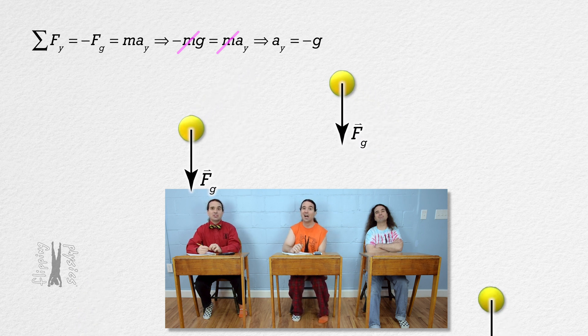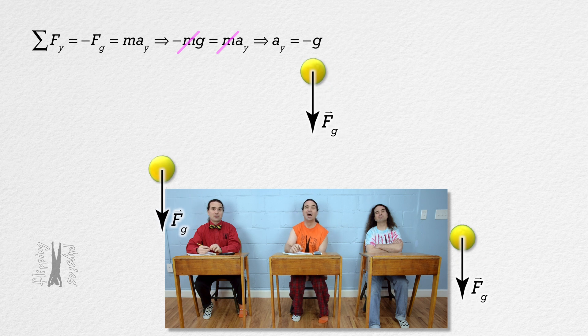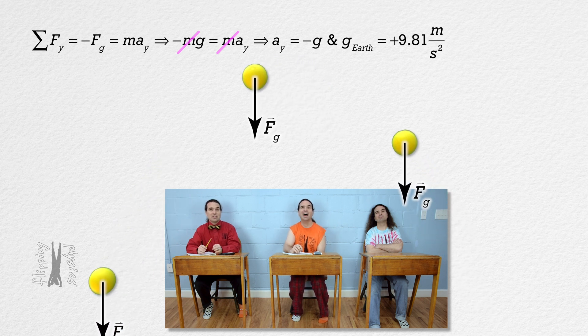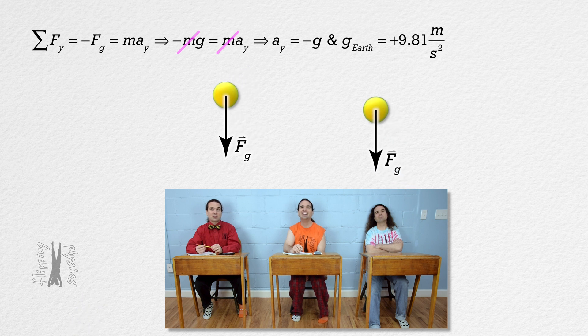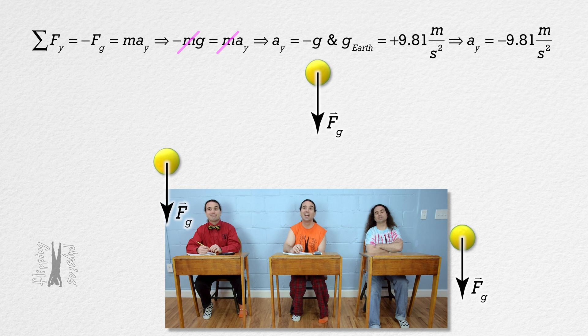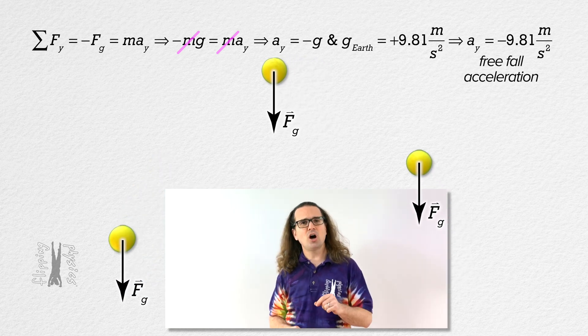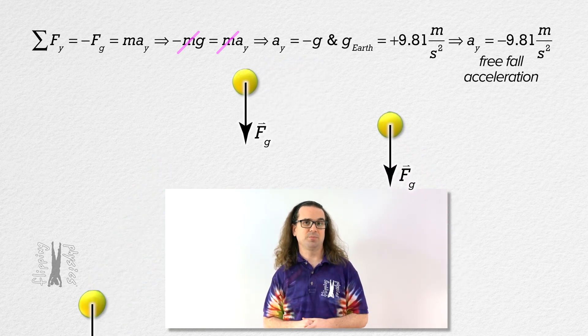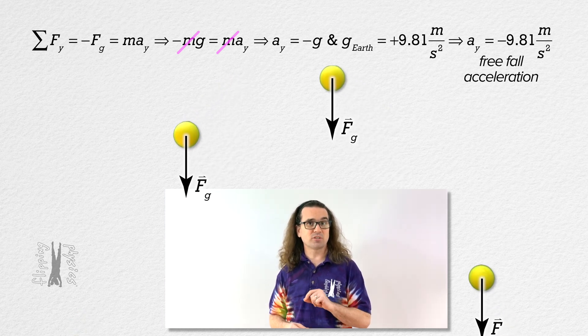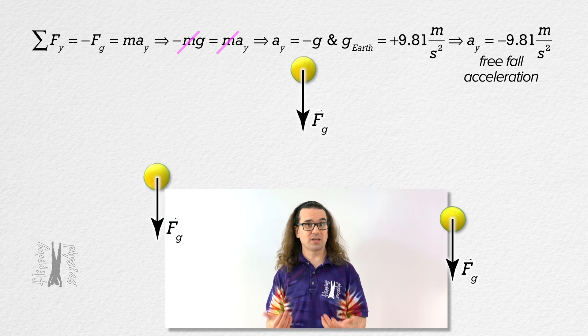That means the acceleration in the y direction equals negative little g. Oh, and because the acceleration due to gravity near the surface of planet Earth equals positive 9.81 meters per second squared, the acceleration in the y direction of any object in projectile motion equals negative 9.81 meters per second squared. Sure. Right. And that freefall acceleration is caused by the force of gravity. The reason freefall acceleration is negative is because the force of gravity is down or toward the center of the planet.